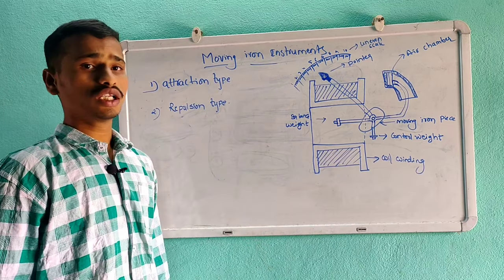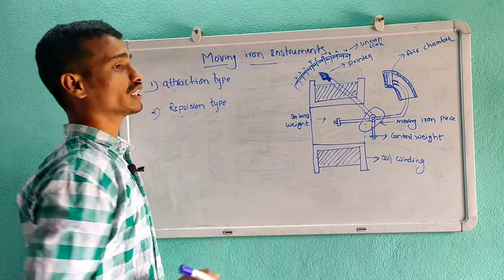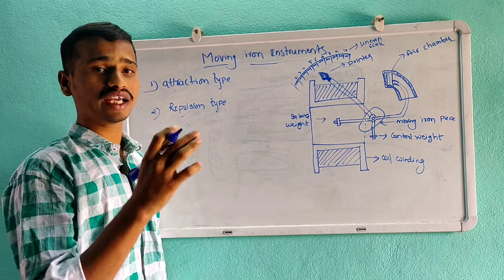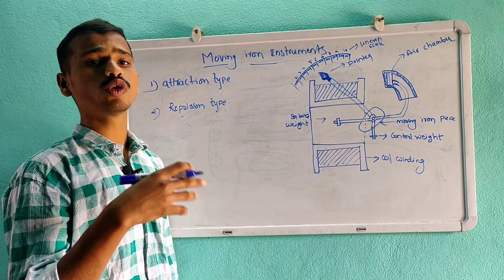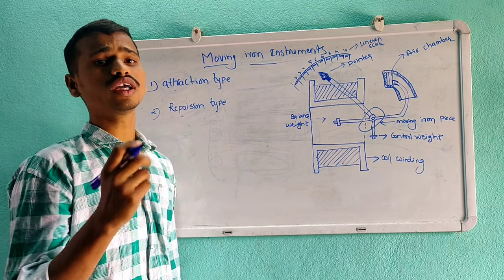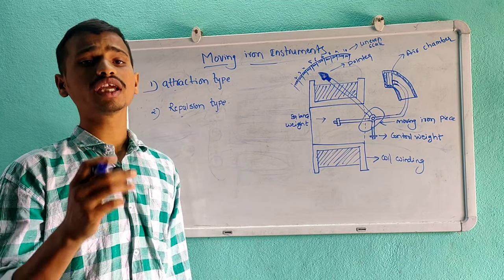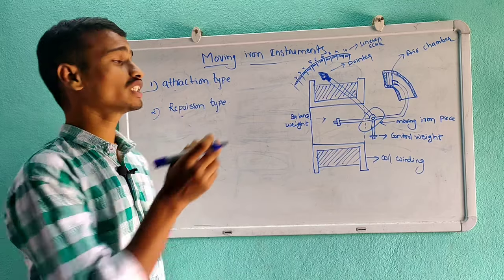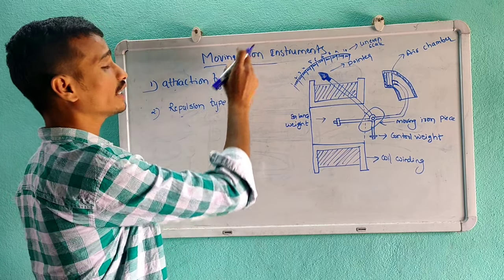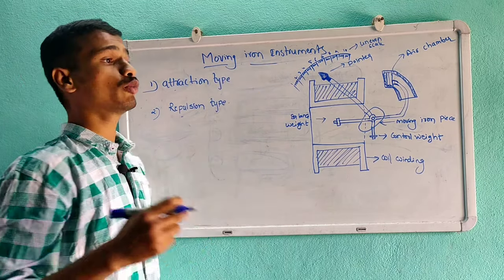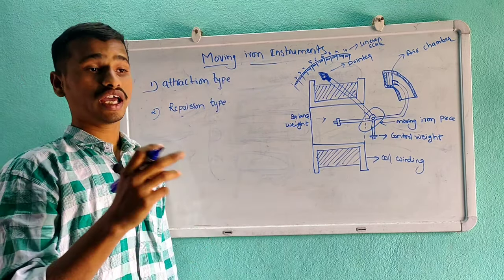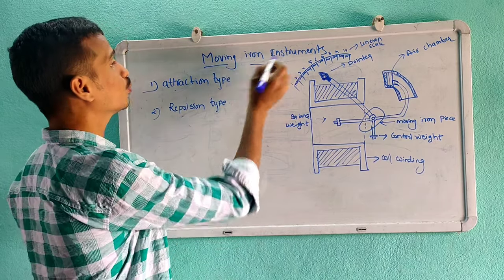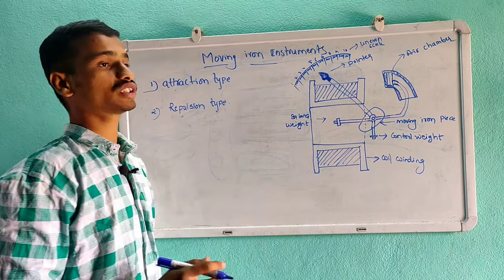The name itself is moving iron. That means the iron piece is mobile. In the case of moving coil instruments, the coil is mobile. But in the case of moving iron instruments, the iron is mobile and the coil is stationary. So the name is moving iron instruments.